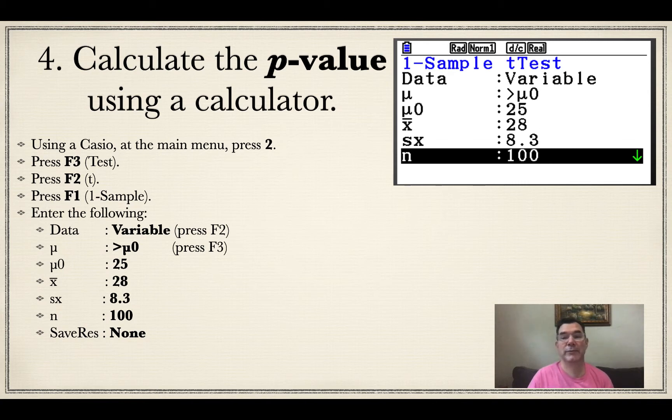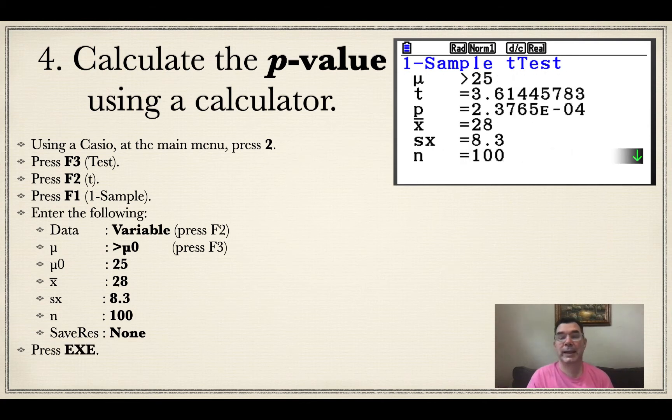Our n is 100 because we surveyed 100 people, and save res will be none. There's me starting to input that information. Data is variable, mu is greater than mu zero, mu zero is 25, x bar is 28, SX is 8.3, n is 100. After all of that is put in, I press EXE.